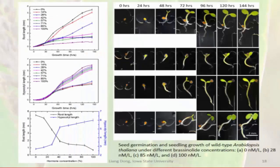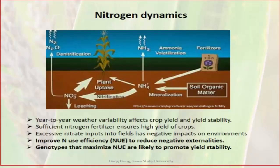We did some screening work about how environmental conditions affect growth. In this particular case, we changed the hormone concentration in the solution to see how that affects the growth of Arabidopsis. So this is the plant chip, and we can do even more with it.